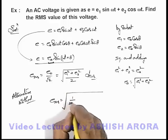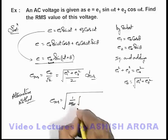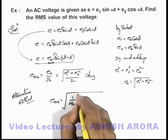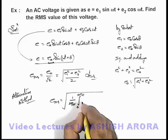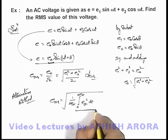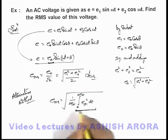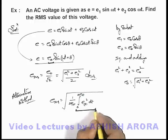One by time period, which is 2π by omega, integration from zero to 2π by omega, emf as a function of time squared into dt. Because here this function is giving us mean square value of the alternating emf.